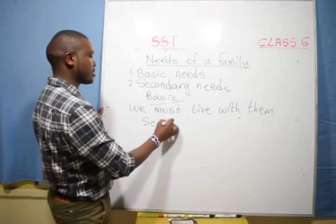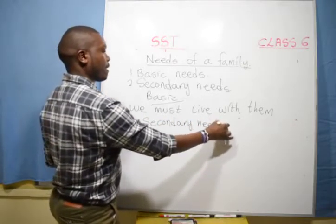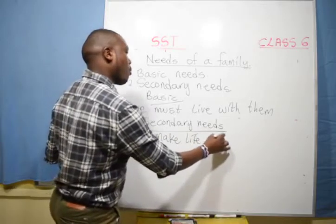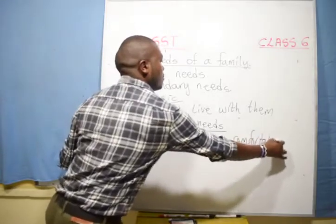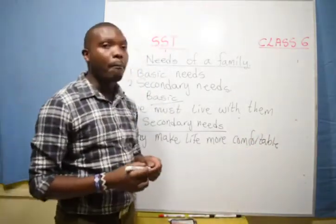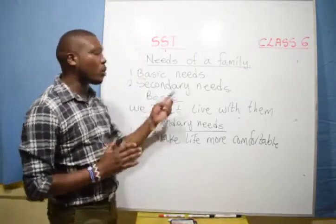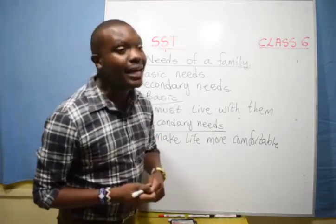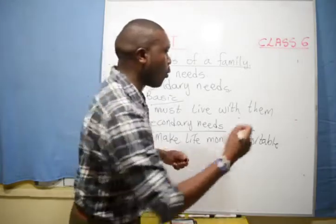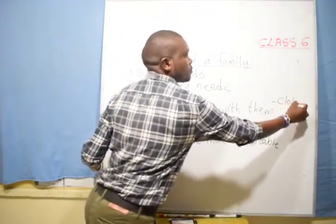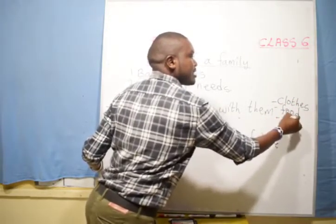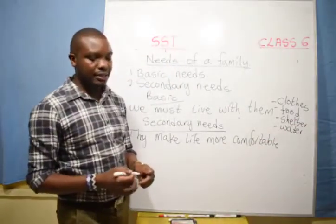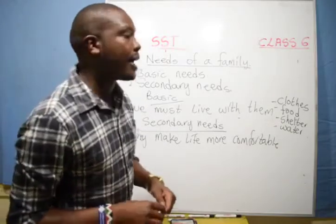Then we have the secondary needs. The secondary needs make life more comfortable. Now, the examples of basic needs: a person must have four basic needs. One, we have clothes, food, shelter, and water. These are the four basic needs.